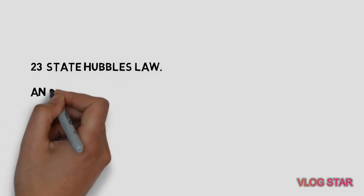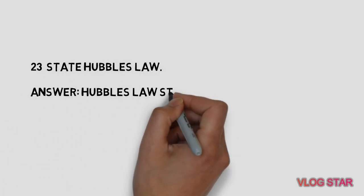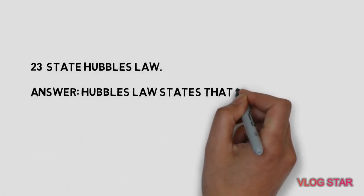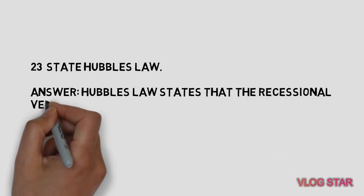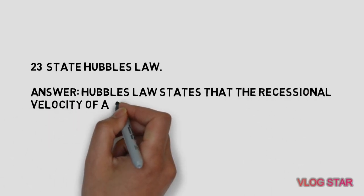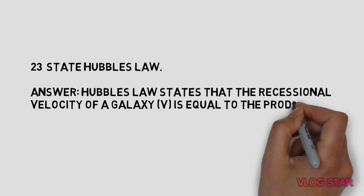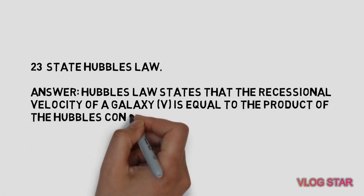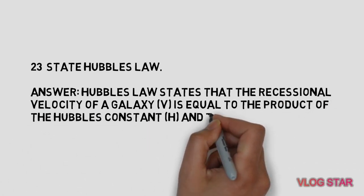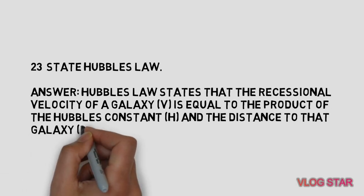State Hubble's Law. Hubble's Law states that the recessional velocity of a galaxy (V) is equal to the product of Hubble's constant (H) and the distance to that galaxy (D), or V = HD.